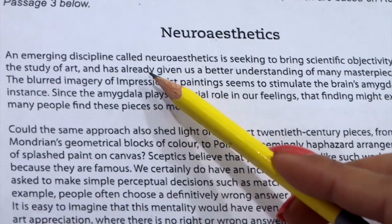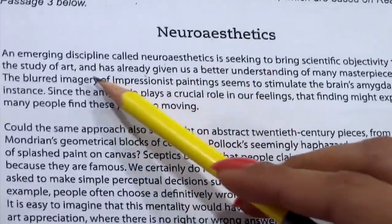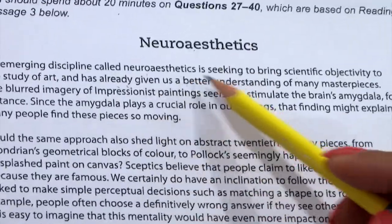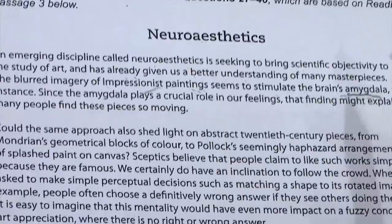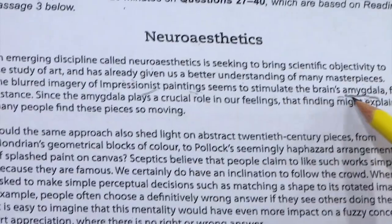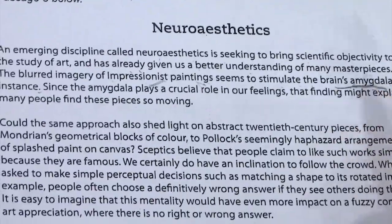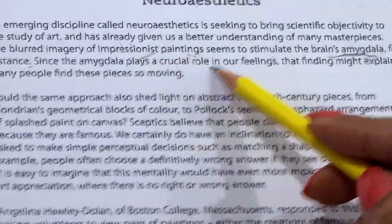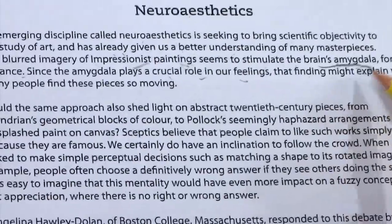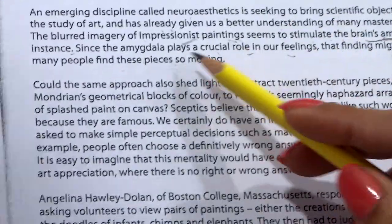When we read the first passage: 'An emerging discipline called neuroaesthetics is seeking to bring scientific objectivity to the study of art and has already given us a better understanding of many masterpieces. The blood imagery of impressionist painting' — the keyword is there — 'seems to stimulate the brain's amygdala.' What is amygdala? It's a part of our brain system which is responsible for emotions. Since the amygdala plays a crucial role in our feelings, that finding might explain why many people find these pieces so moving. So now they are talking about amygdala and feelings.